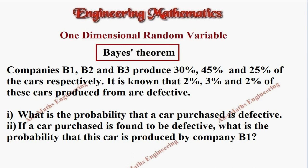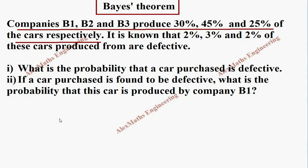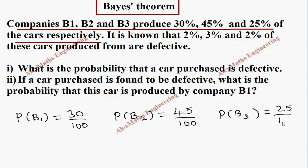They have given companies B1, B2 and B3 produce 30 percentage, 45 percentage and 25 percentage of the cars respectively. So let's take the probability values P of B1 is 30 by 100, P of B2 is 45 by 100, P of B3 is 25 by 100.